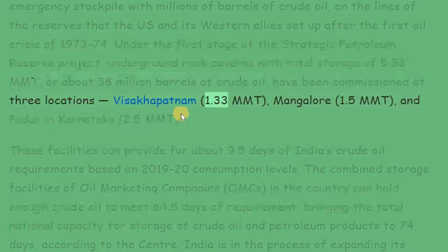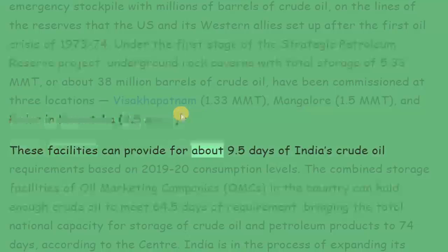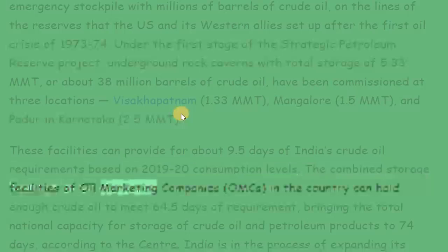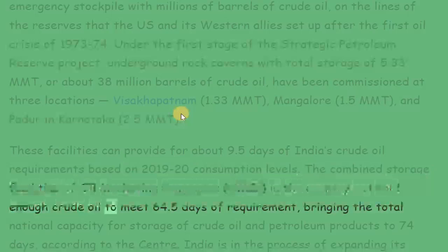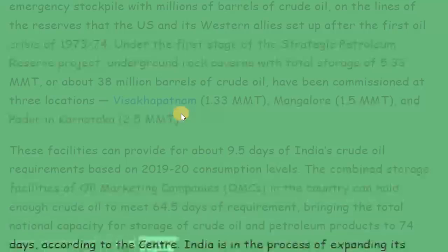The three locations are Visakhapatnam (1.33 MMT), Mangalore (1.5 MMT), and Padur, Karnataka (2.5 MMT). These facilities can provide for about 9.5 days of India's crude oil requirements based on 2019–2020 consumption levels. The combined storage facilities of oil marketing companies (OMCs) in the country can hold enough crude oil to meet 64.5 days of requirement, bringing the total national capacity for storage of crude oil and petroleum products to 74 days, according to the Centre.